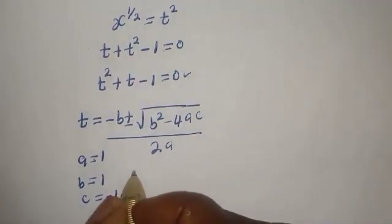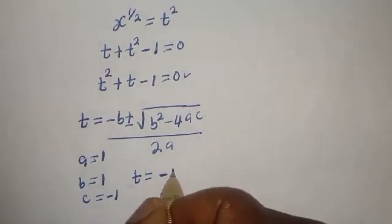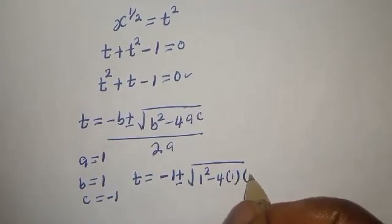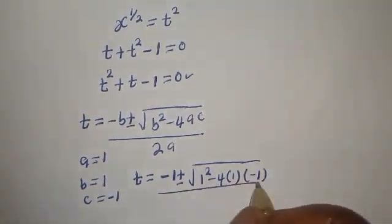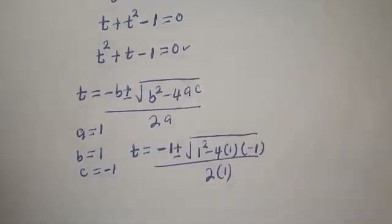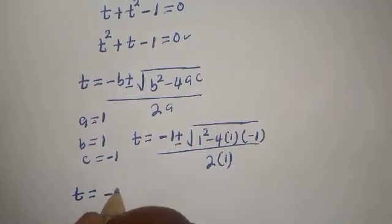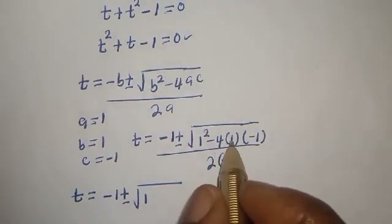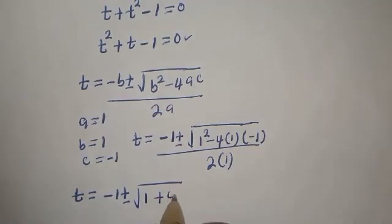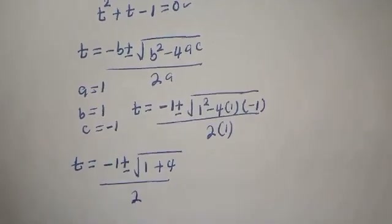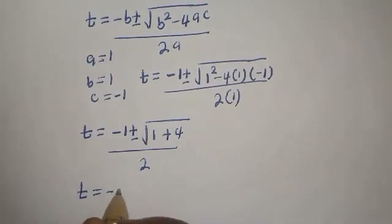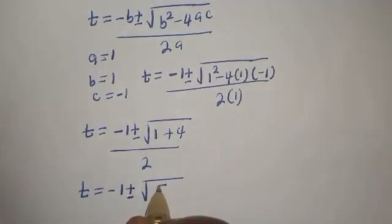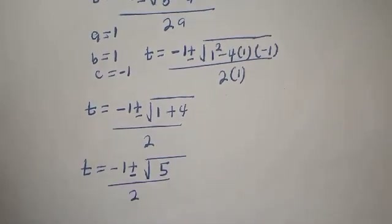So t is equal to minus 1 plus or minus square root of 1 squared minus 4 multiplied by 1 multiplied by minus 1, over 2 multiplied by 1. That gives t is equal to minus 1 plus or minus square root of 1 minus 4 times 1 times minus 1, which simplifies to minus 1 plus or minus square root of 1 plus 4, giving square root of 5 over 2.